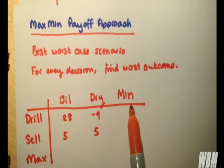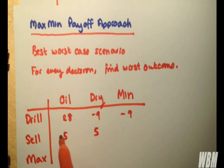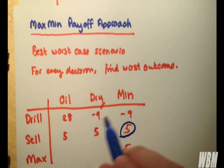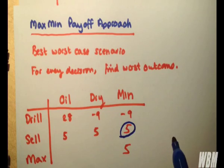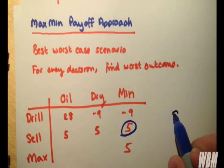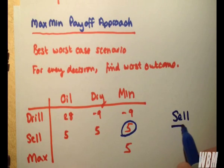So looking across, what's the minimum? Minus 9, 5, and the max of these is 5. I hope that's quite straightforward. So the max-min payoff approach would be sell.